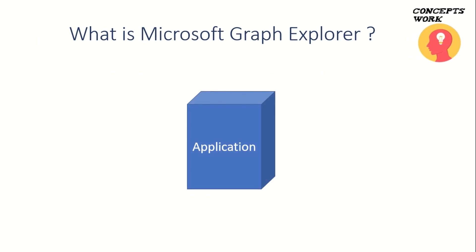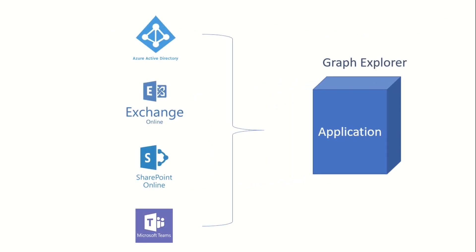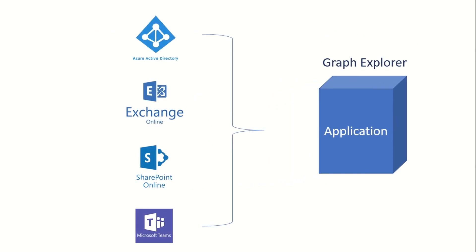In a nutshell, in the easiest concept which you can understand, it is an application — a website that you are accessing and it is querying a particular API. This application can be used to query data which belongs to a variety of services that Microsoft has to offer. Some of the common ones can be Azure AD, Exchange Online, SharePoint Online, or Teams.